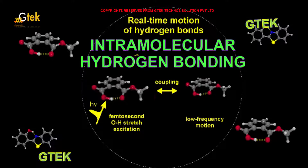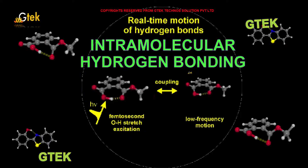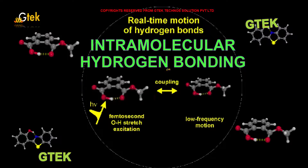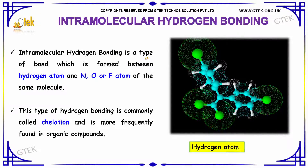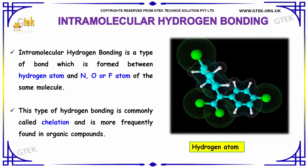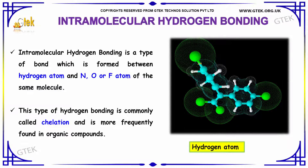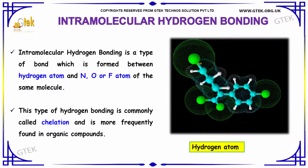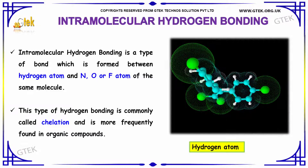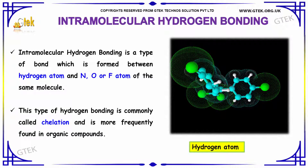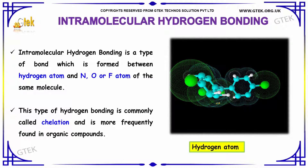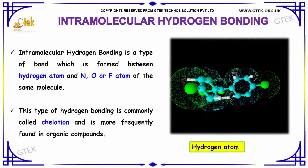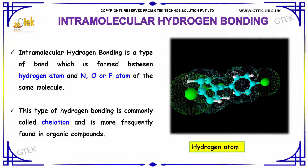Let's think about intramolecular hydrogen bonding. Intramolecular hydrogen bonding is a type of bond which is formed between a hydrogen atom and a nitrogen, oxygen, or fluorine atom of the same molecule. This type of hydrogen bonding is commonly called chelation and is more frequently found in organic compounds.